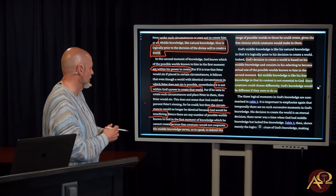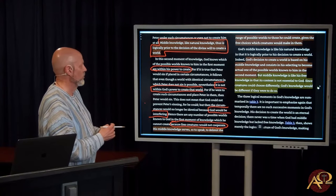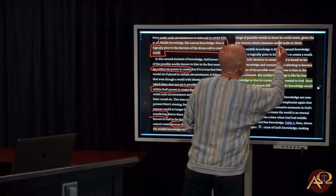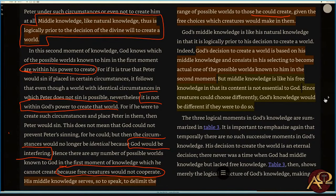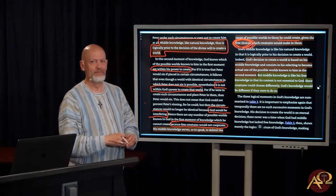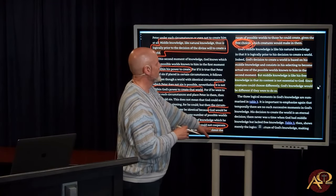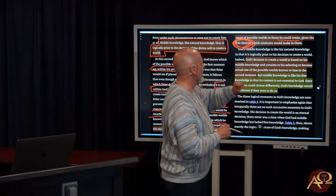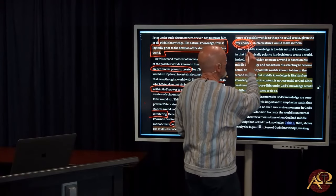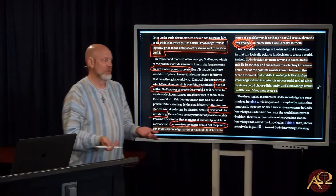His middle knowledge serves, so to speak, to delimit the range of possible worlds to those he could create given the free choices which creatures would make in them. There is Molinism. So God is limited to what he can create by the free choices which creatures would make in them. He doesn't determine those things. Who did?